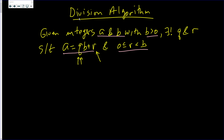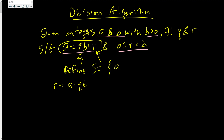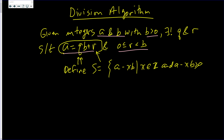From the equation A = QB + R, we know that R equals A minus QB. I want R to be as small as possible. So I define a set S equal to the set of all values A minus xB, where x is an integer and A minus xB is non-negative. I want to find the smallest element in this set.